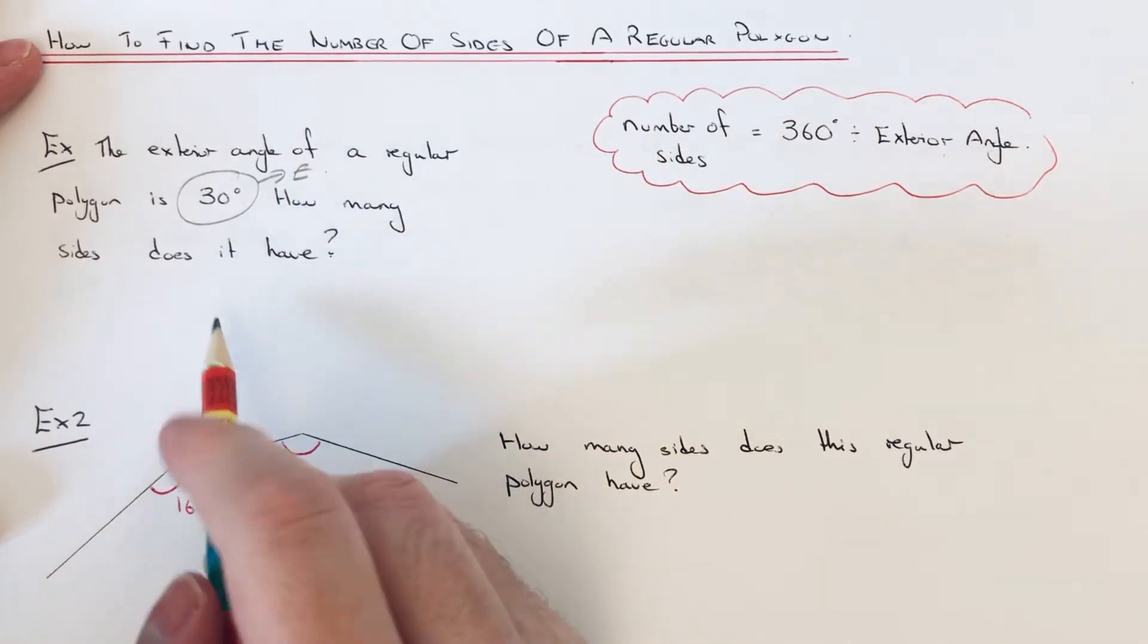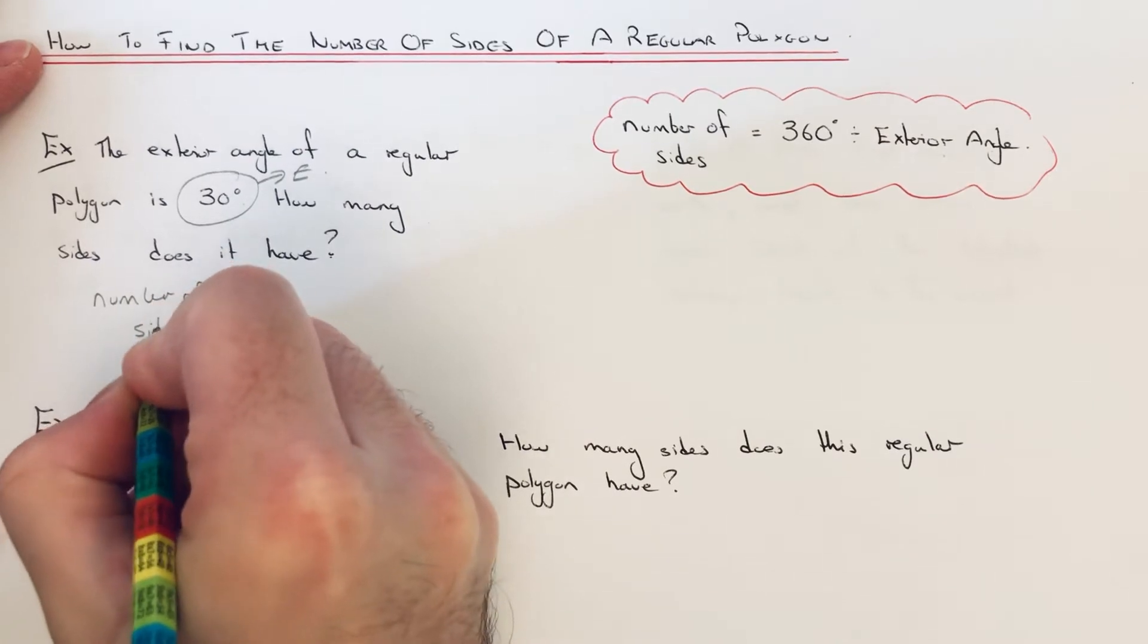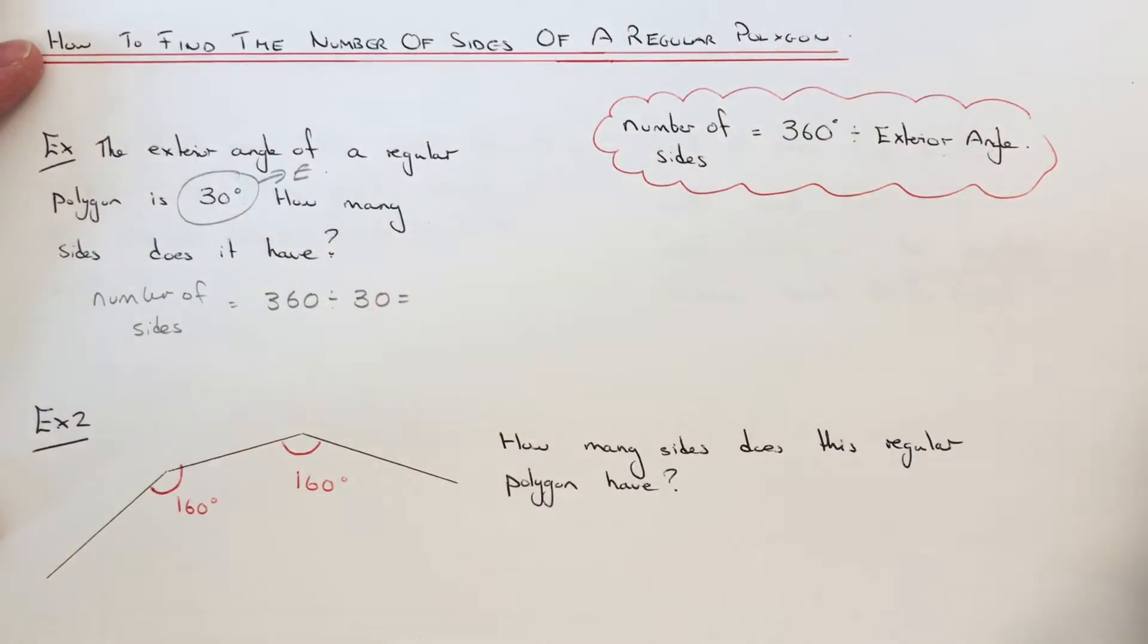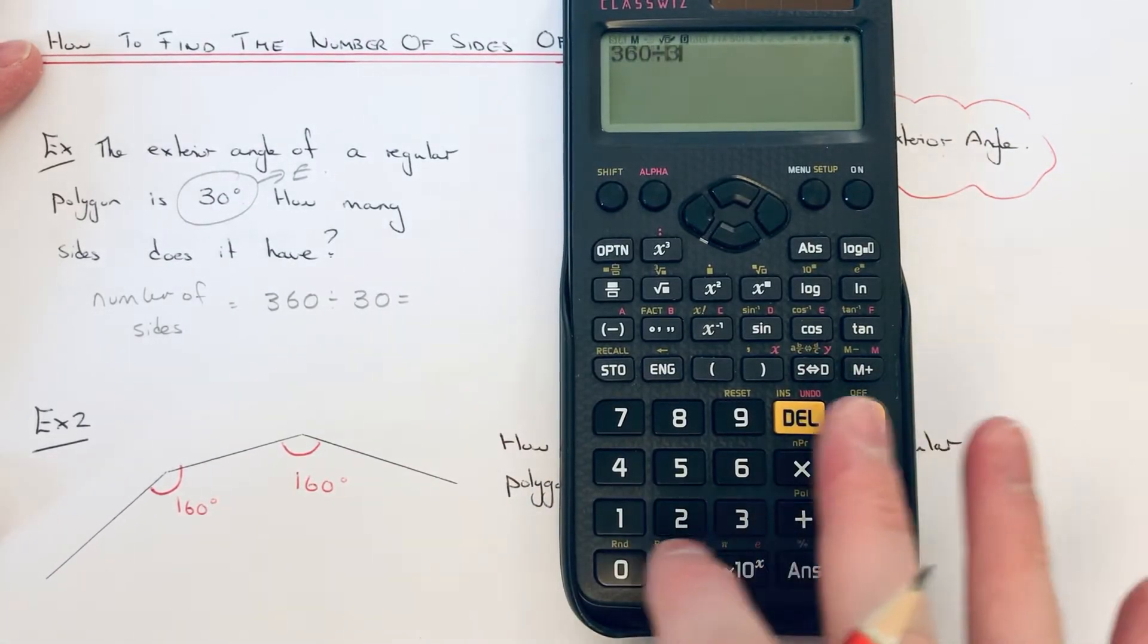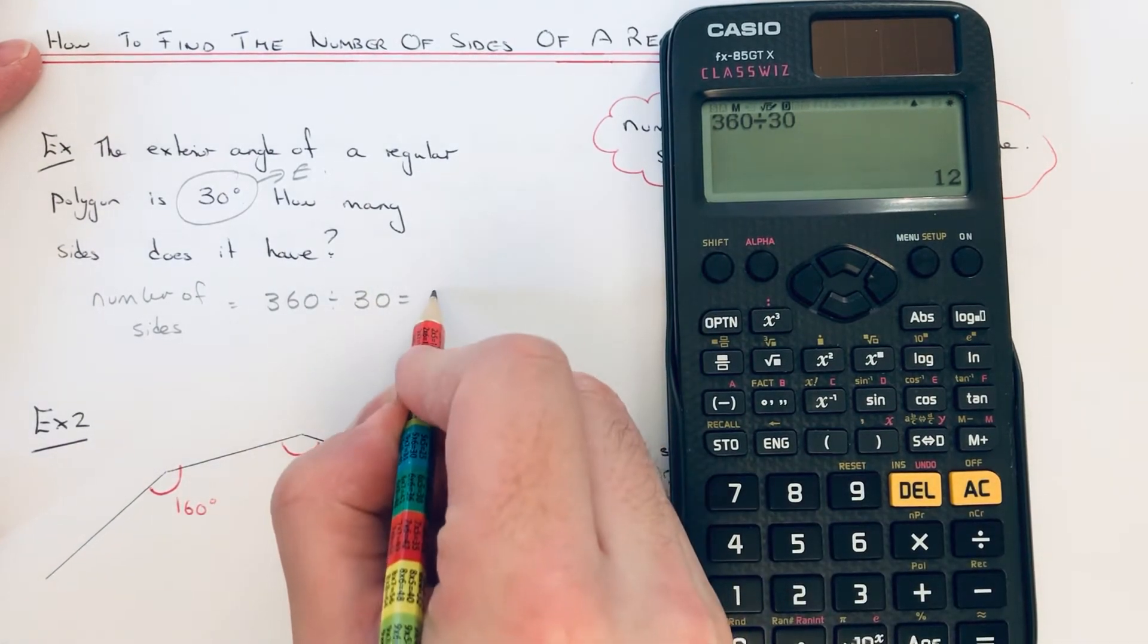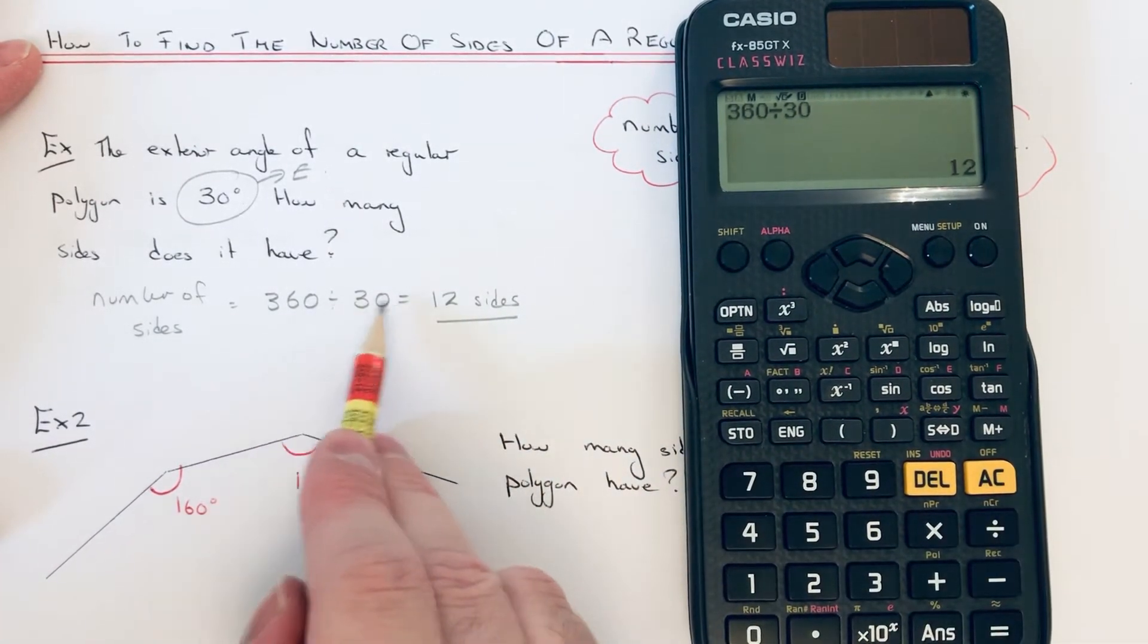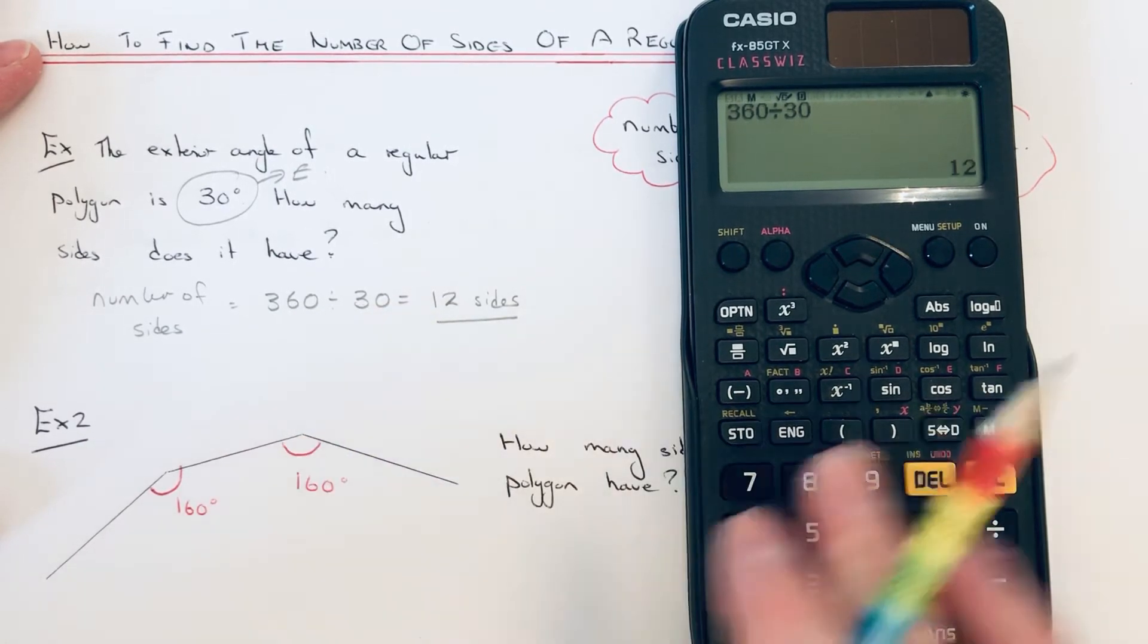To get the number of sides, we just do 360 divided by the exterior angle. So put that on the calculator: 360 divided by 30 is 12. So our polygon has 12 sides. If you didn't have your calculator, you could just cancel off the zeros and do 36 divided by 3.